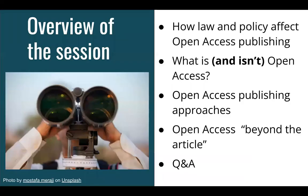Here's an overview of what we're planning to cover today. First, I'll talk about how US copyright law and University of California policy affects what authors can do with their scholarly publishing — this is an important baseline. Then we'll go into what open access publishing is and what it's not. After that, I'll cover two prevalent approaches: self-archiving open access and journal-based open access publishing.